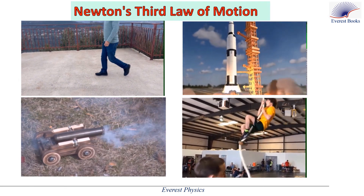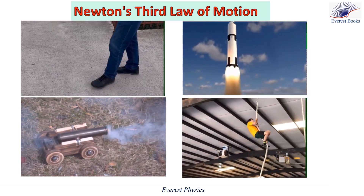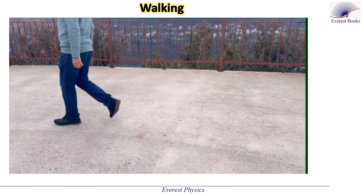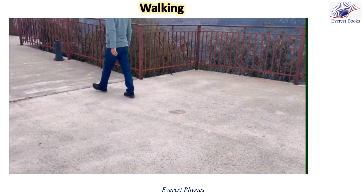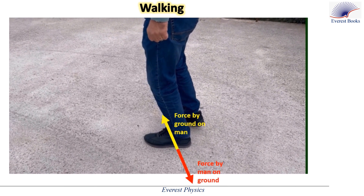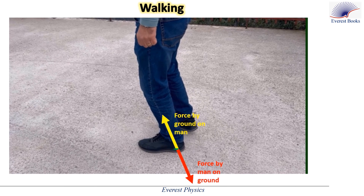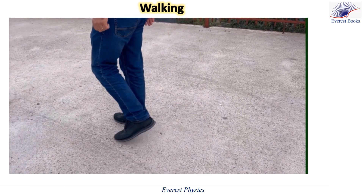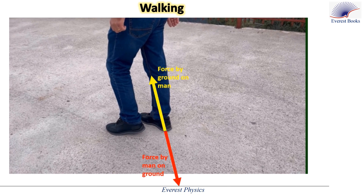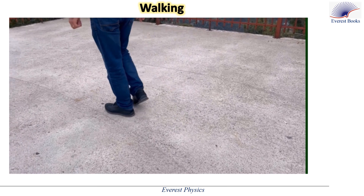Let's explore everyday situations demonstrating Newton's third law. How does someone walk on the ground? While walking, when a foot applies an oblique force on the ground, the ground exerts an equal and opposite force on the foot according to Newton's third law. The horizontal component of this reaction force propels the person forward, and the same applies with each subsequent step.